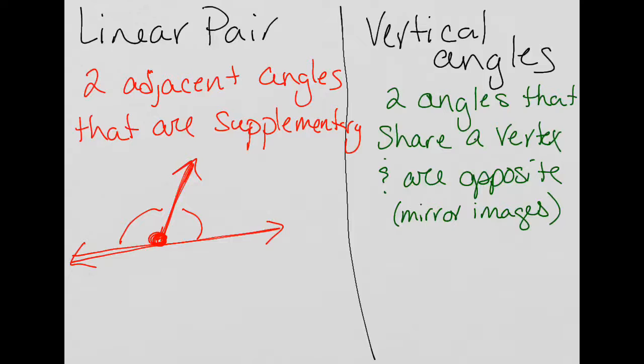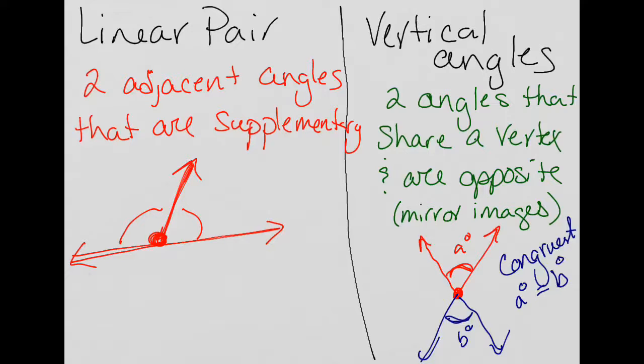Vertical angles are two angles that do share vertex, but they're opposite or mirror images. So if I created this red top angle here, the mirror image would be down here. So angle A and angle B are vertical angles. And because they're mirror images of each other, they are congruent, meaning that angle A's measurement is equal to angle B's measurement.